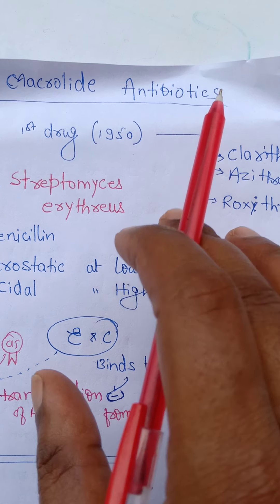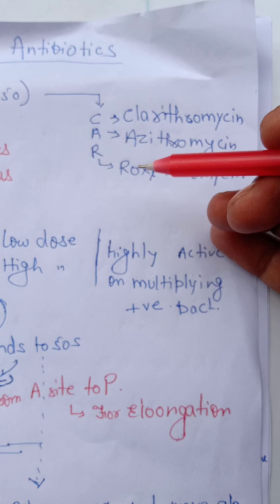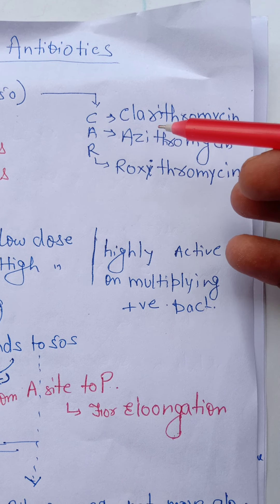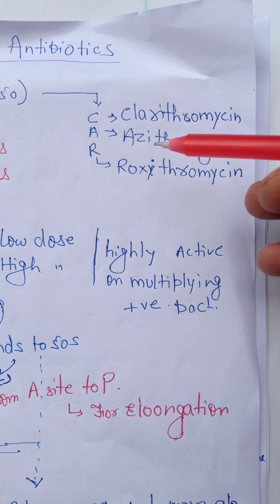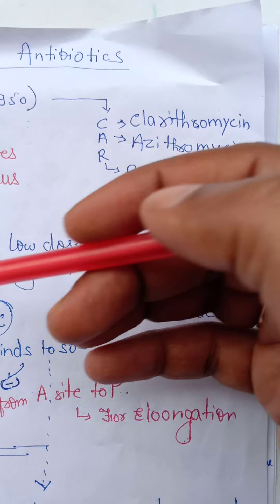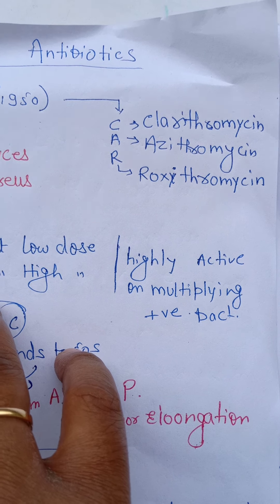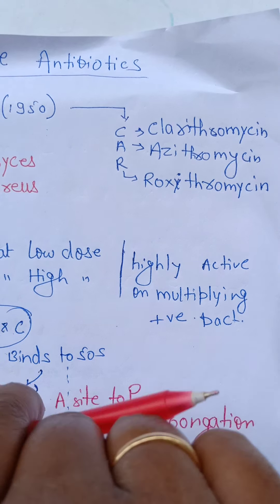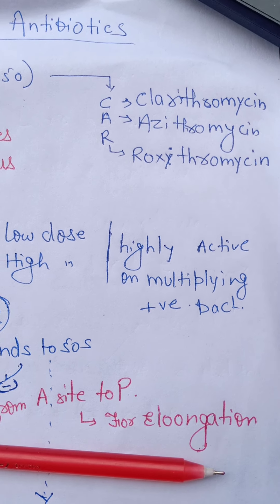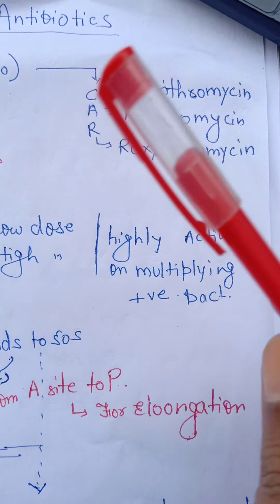Nowadays, erythromycin and its congeners are referred to by the acronym CAR: C for clarithromycin, A for azithromycin, and R for roxithromycin. Thus, in this macrolide antibiotic group, we have erythromycin and their congeners — clarithromycin, azithromycin, and roxithromycin.